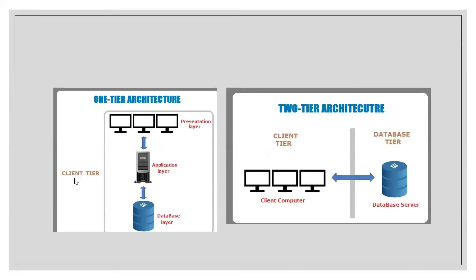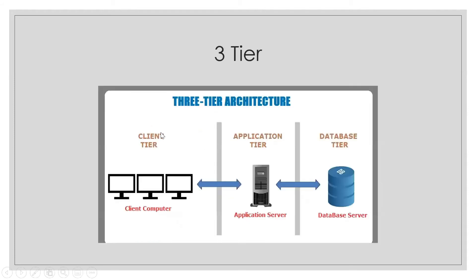In one-tier architecture, the presentation layer, application layer, and database layer all sit in the same client-tier location. In two-tier, the client communicates with a server that contains both the application layer and database layer together. In three-tier, we have the client, a separate application layer server, and a separate database layer server — these are three different servers, and this is called three-tier architecture.